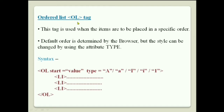Ordered list means OL tag. This tag is used when the items are to be placed in a specific order. The default order is determined by the browser, but the style can be changed by using the type attribute. This is the syntax of the OL tag — start and type are both attributes of the OL tag.